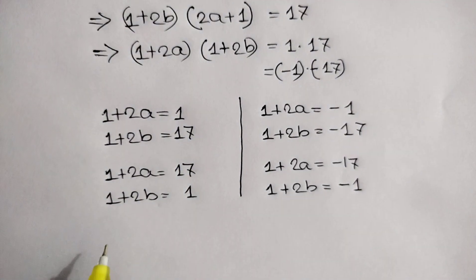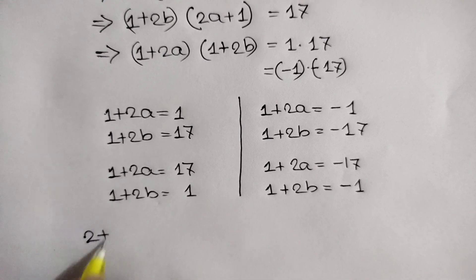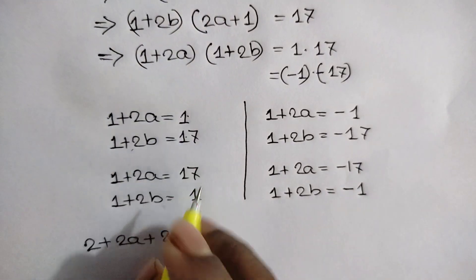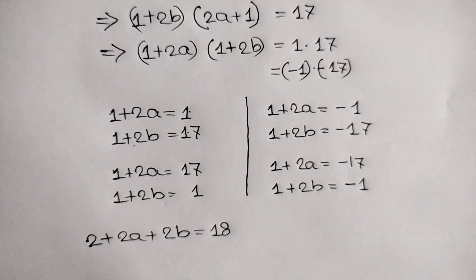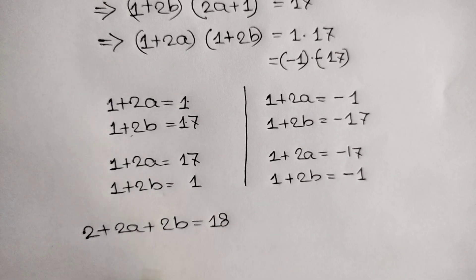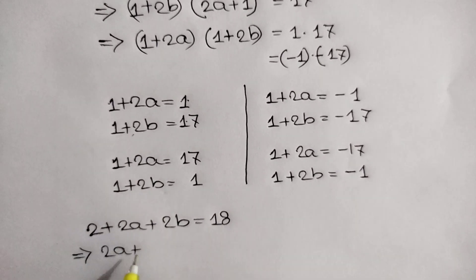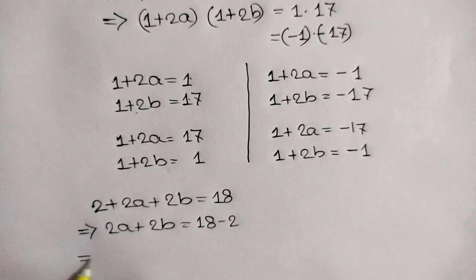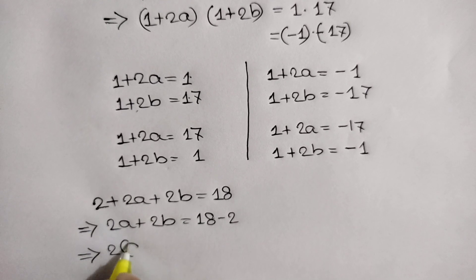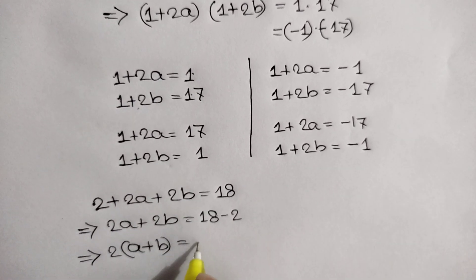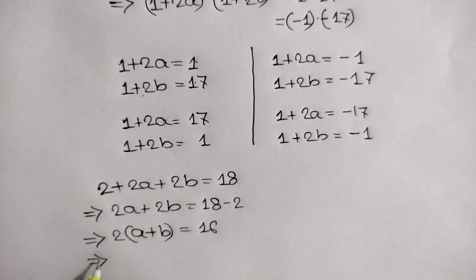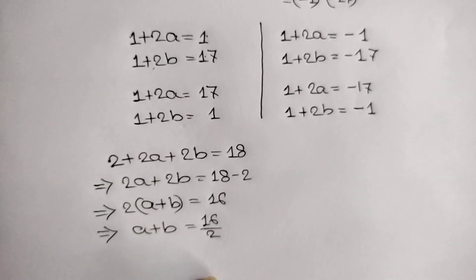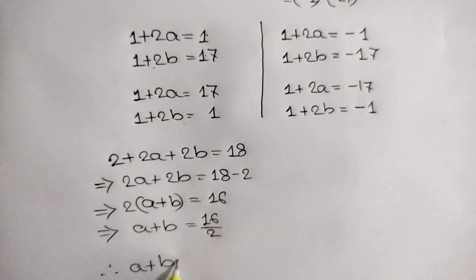Adding the two equations for the first case, we get 2 plus 2a plus 2b equals 17 plus 1. Taking common 2, we can write 2(a plus b) equals 18 minus 2, which gives 2(a plus b) equals 16. Dividing both sides by 2, the value of a plus b is equal to 8.